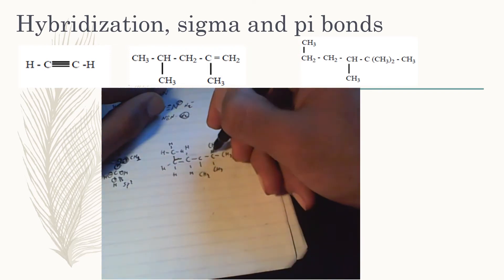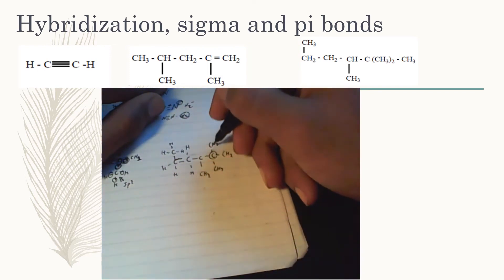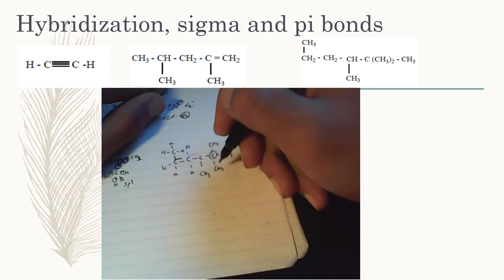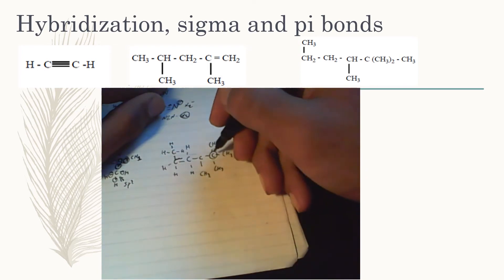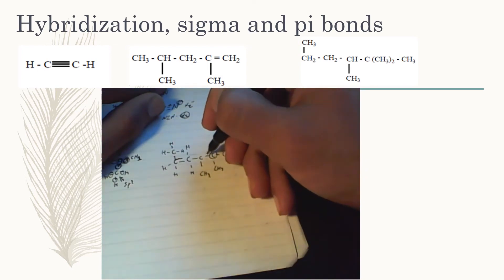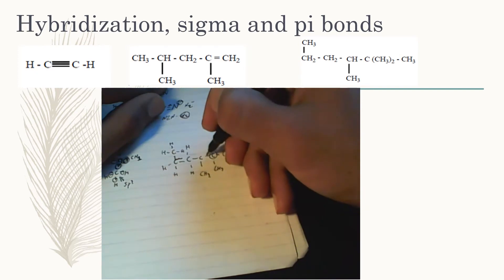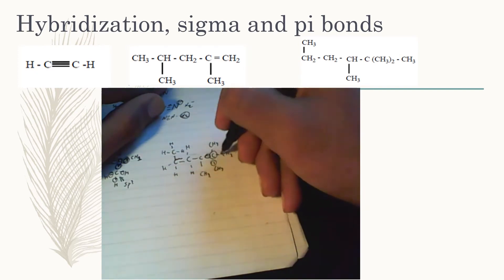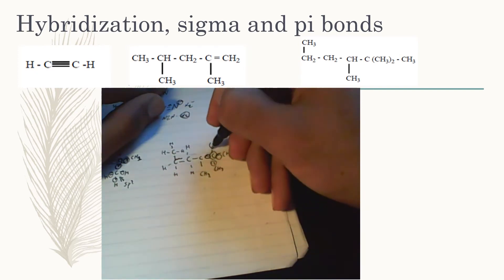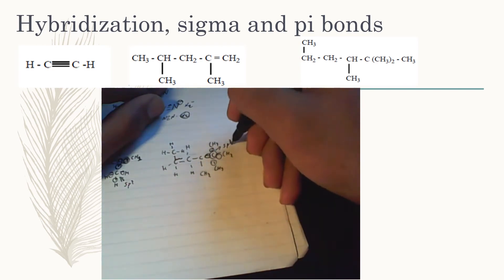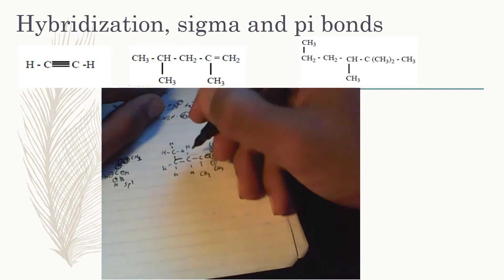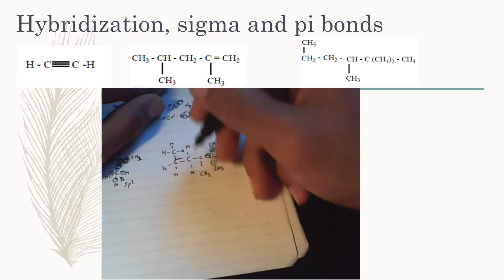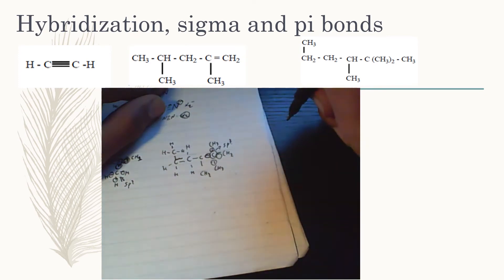The pattern is: when a carbon is bonded to four different things, it's SP3; bonded to three things with a double bond, SP2; and bonded to just two things with a triple bond, SP hybridized. It doesn't matter which atom is bonded — as long as you count the orbitals used for bonding, the hybridization is the same. Every carbon in an all-single-bond molecule is SP3 hybridized.